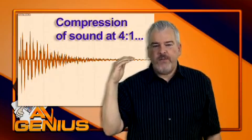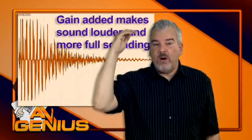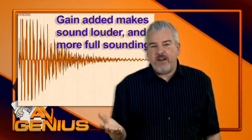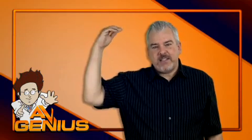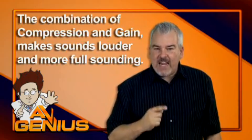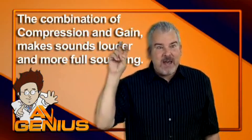The loud parts are made quieter by compression. Then, the gain control can raise the peaks back to where they were and bring the quieter parts of the sound up in the process. So, the sound gets louder even though the peaks are back to the same level. Gain is how compression makes things louder.